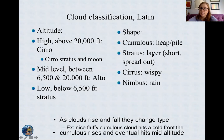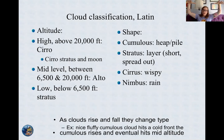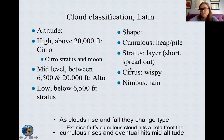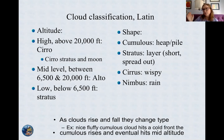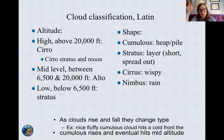Stratus in Latin means layer. Nimbostratus clouds are those clouds that look like a sheet of dark gray cloud and you know it's probably going to rain. Cirrus means wispy — cirrus clouds are those wispy clouds sometimes called horsetails because they kind of look like whipping horsetails in the atmosphere. And nimbus means rain in Latin. So if you see the word nimbus attached to any cloud, it's a rain cloud.